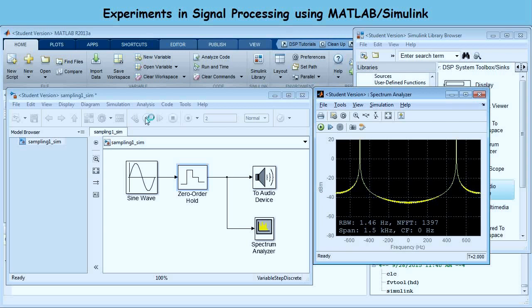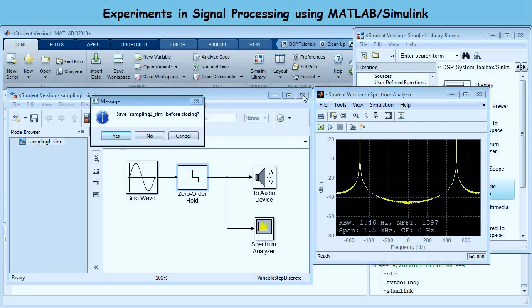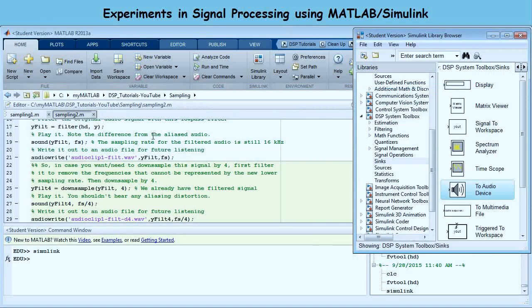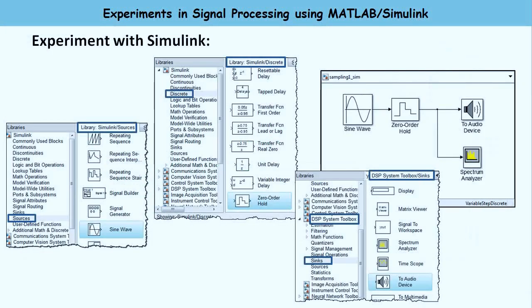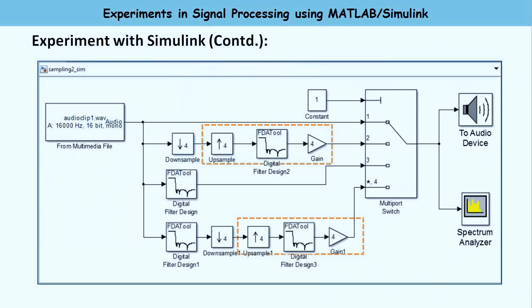Moving on to the next phase — let me close this model without saving. The next phase of the experiment is with the audio file. I already have the model created. It has a block called From Multimedia File, which reads the audio file from disk just like we did in MATLAB. It already knows this is a 16 kHz, 16-bit mono audio file. We do all the different processing and pass them through a selector switch — a Multiport Switch block. A Constant block specifies which input to pass through: 1, 2, 3, or 4.